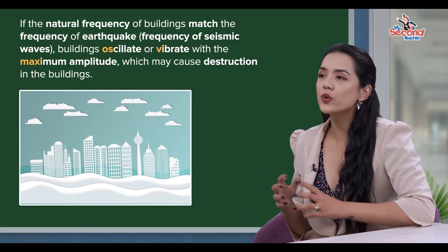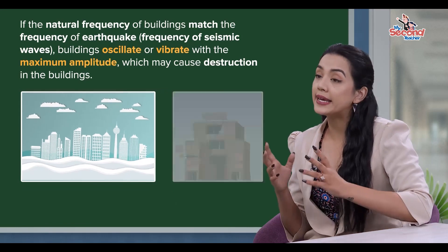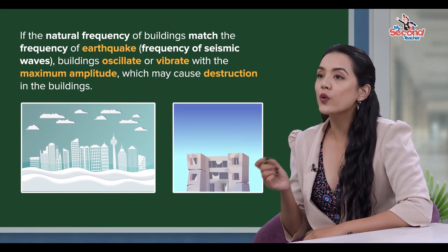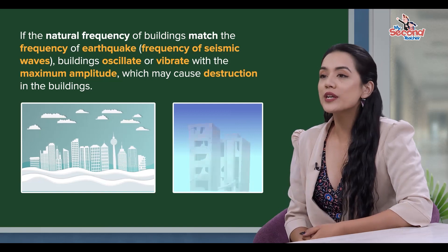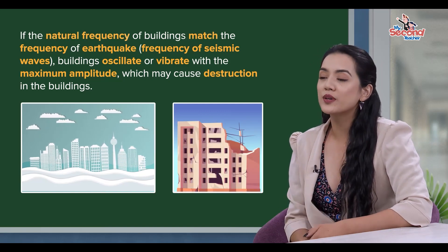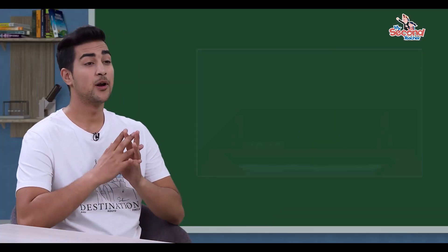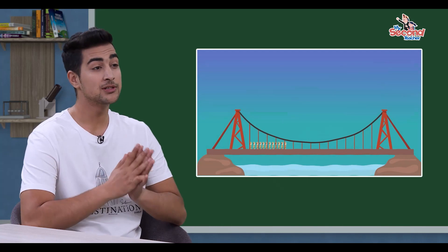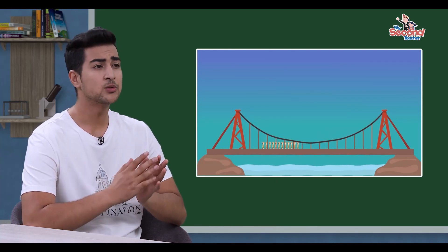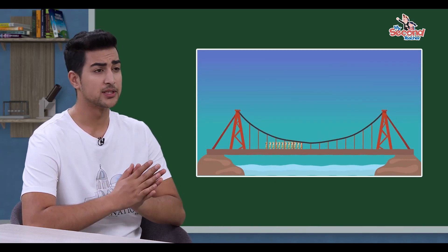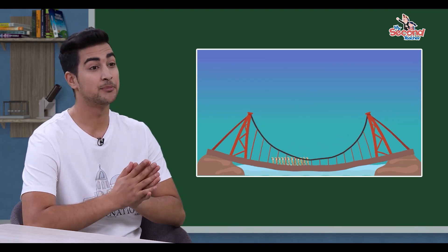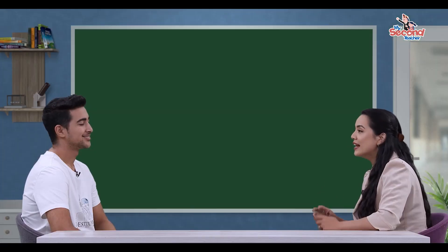An earthquake causes certain buildings to collapse because the earthquake's frequency matches the natural frequency of those buildings. Similarly, the breeze or soldiers marching generate a frequency that matches the natural frequency of the bridge, causing resonance and collapse. Exactly!